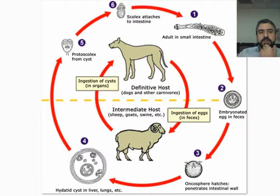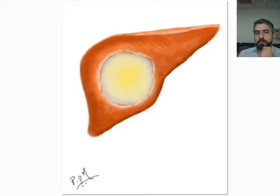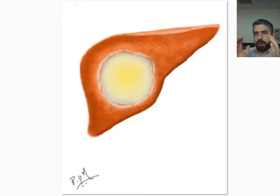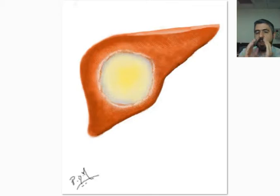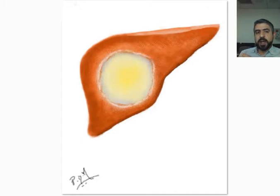Regarding the classification of Hydatid cysts: radiologically and pathologically, the parasite will start forming a cyst that displaces the liver parenchyma, forming a fibrous capsule around the cyst. There will be three layers — the ectocyst, the pericyst, and the endocyst. The ectocyst is the compressed fibrous capsule surrounding the cyst. Then there is the wall of the cyst itself, and then the inner layer that forms the scolices, to which the daughter cysts are attached.